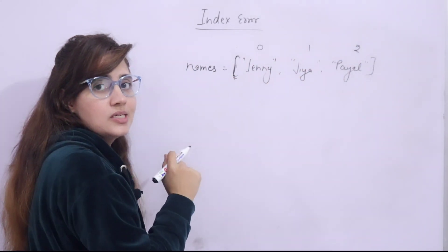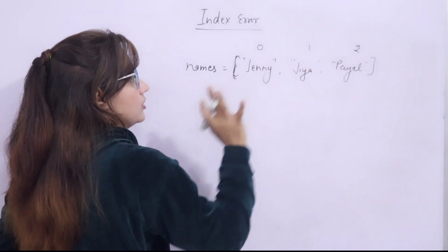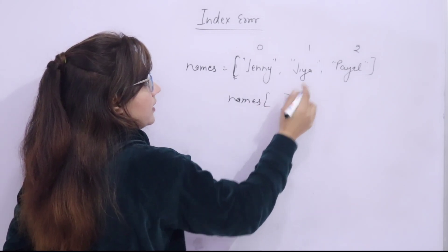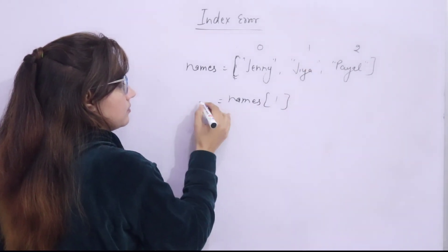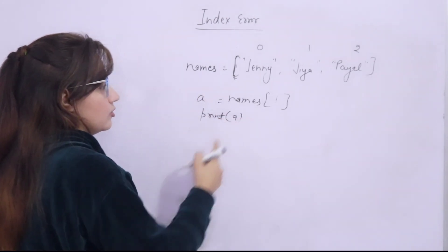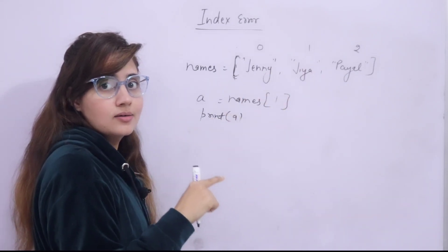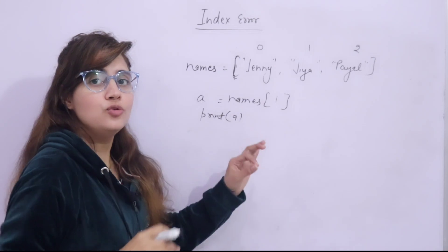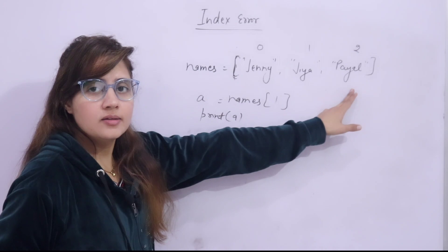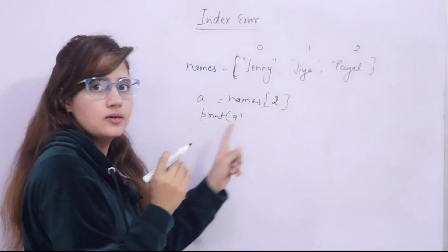This is what index and how to access these elements. Suppose I want to access this Payal, this element or Jiya. How you will access? Simply, the name of the list and in square brackets just pass the index 1. And suppose I am passing this in A and I am just printing A. So it will give you Jiya. But here, this error is quite common when you want to access the last element of the list.